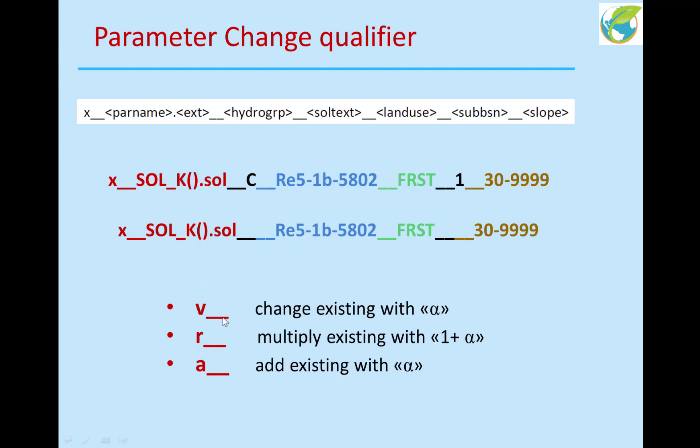Now, for qualifier, if I use V, that means a value change. That means I want to change the existing value with another value like alpha. If I use R, that means a relative change. That means I want to multiply the existing value by 1 plus alpha, 1 plus a certain number. And if I use a, an additional value change, so I would like to even add or subtract a number from the existing value.